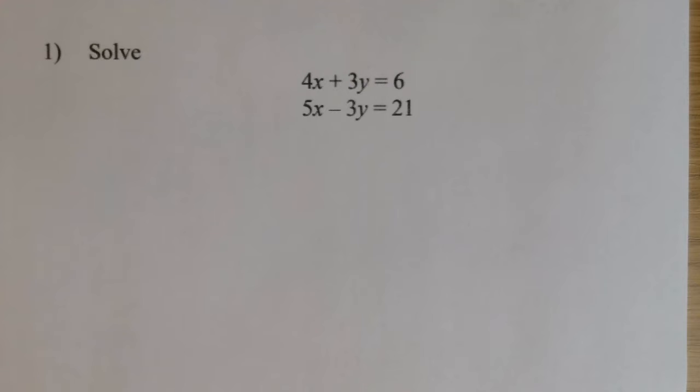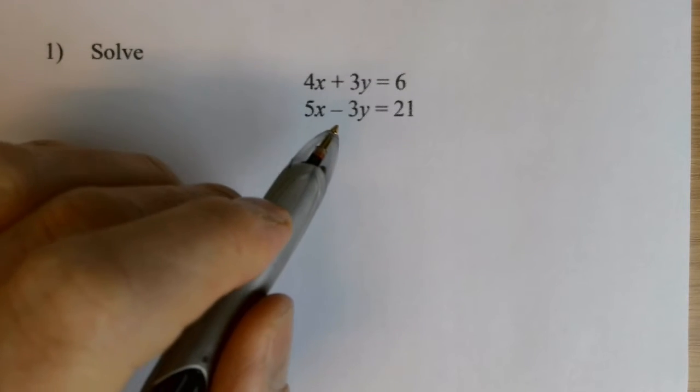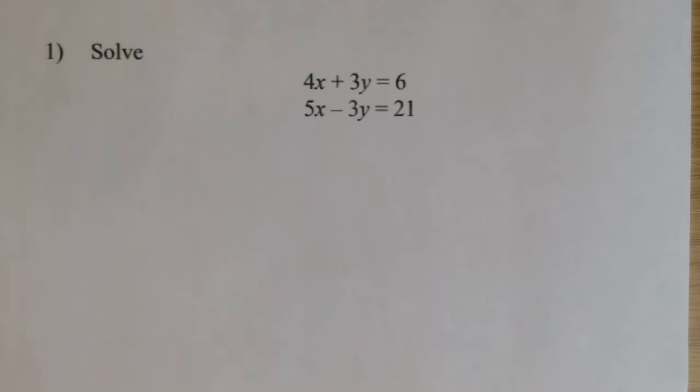So I'm going to use elimination for both of these two questions. I've got the first couple from the sheet to work through. So neither of them can easily be written as x equals or y equals, so substitution doesn't really help. So with this one, with elimination, the first question is, have I got the same number of x's or y's in both equations? And the answer is no.